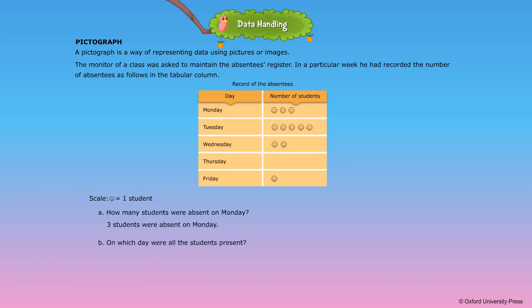B. On which day were all the students present? All the students were present on Thursday. C. On which day did the maximum number of students take leave? The maximum number of students were absent on Tuesday.